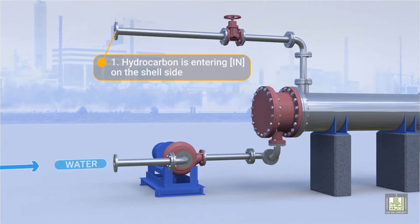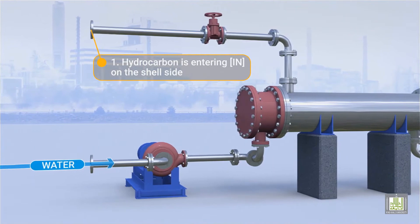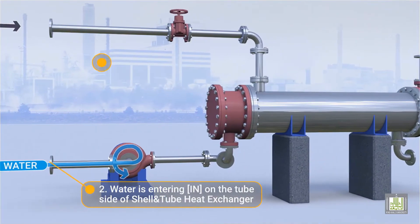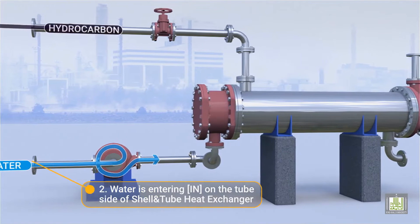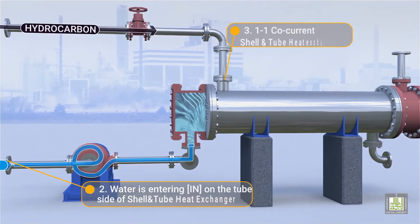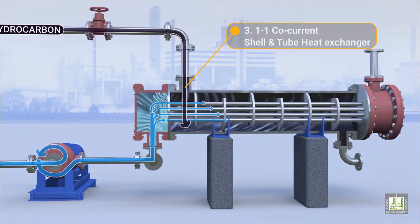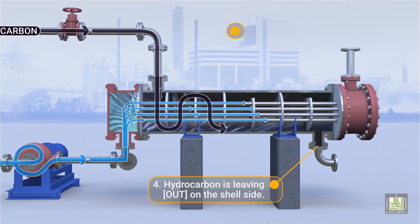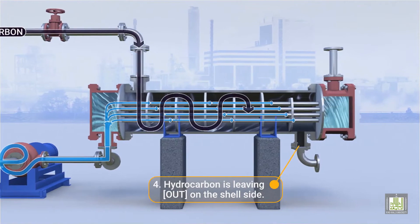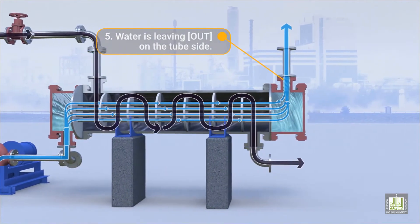Flow pattern: 1. Hydrocarbon is entering on the shell side. 2. Water is entering on the tube side of the shell and tube heat exchanger. 3. 1-to-1 co-current shell and tube heat exchanger. 4. Hydrocarbon is leaving out on the shell side. 5. Water is leaving out on the tube side.